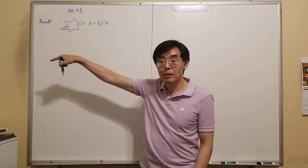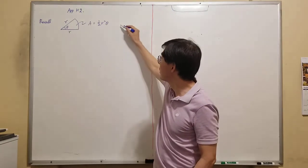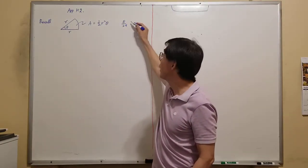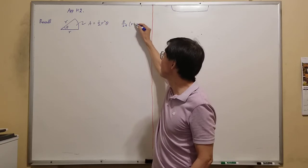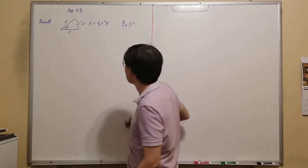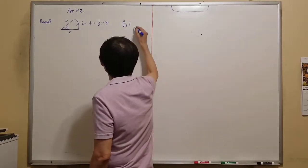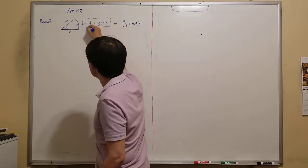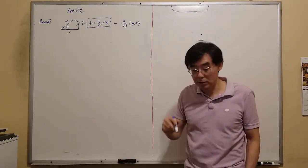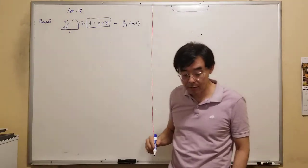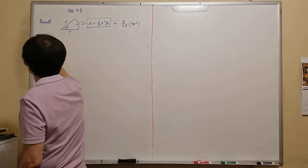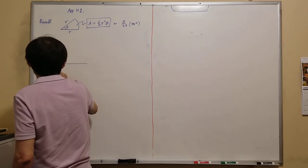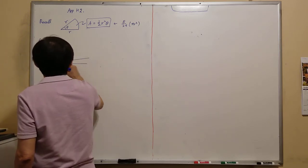This comes from the fact that theta out of 2π is the theta portion of the entire circle area πr², which gives you the circular sector formula. Now here we are interested in the area of the region bounded by a polar curve.